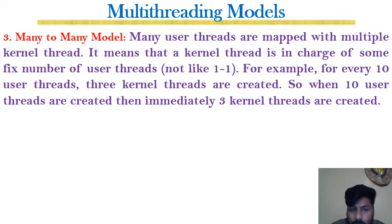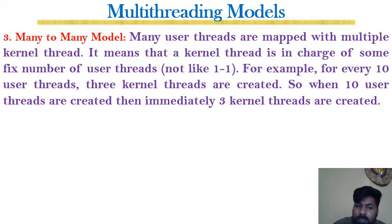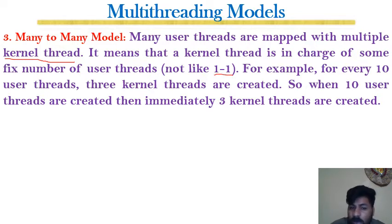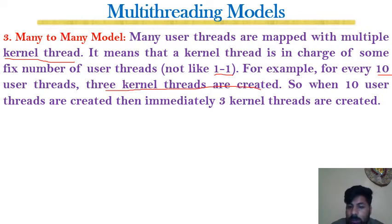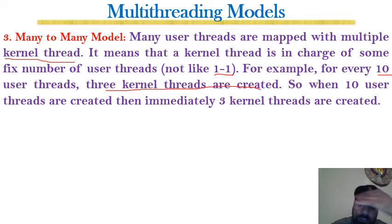The many-to-many model maps many user threads to multiple kernel threads, but the number of kernel threads is less than the number of user threads. Each kernel thread is in charge of some fixed number of user threads — not a one-to-one relationship. For example, for every 10 user threads, 3 kernel threads may be created. When 10 user threads are created, 3 kernel threads are immediately created to manage them.